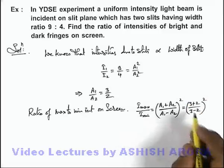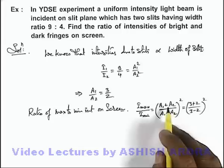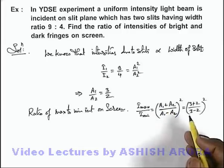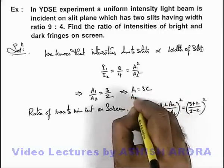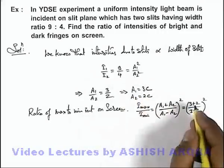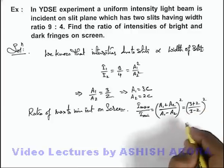Because in this situation the ratio will remain same, only in terms of ratio we can calculate. Here, this implies A₁ we can write as 3c and A₂ we can write as 2c. If we substitute the values, c gets cancelled out.